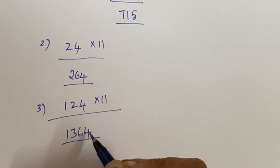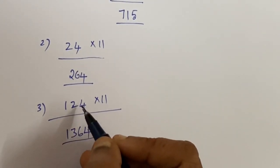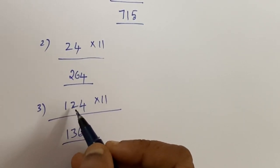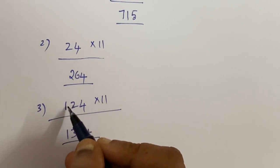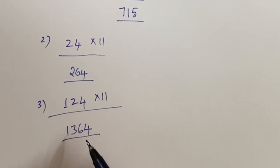In this, the technique is simple: you have to write the units place as it is, so that is 4 here in this case. And you have to add two numbers each time—4 plus 2 is 6, then 2 plus 1 is 3, then you have to write the 1 as it is.